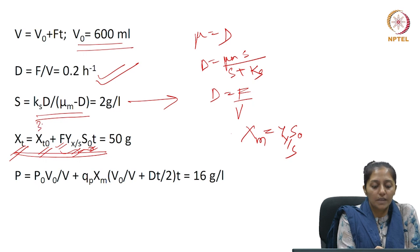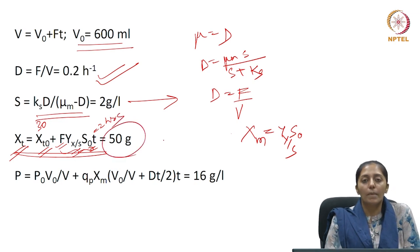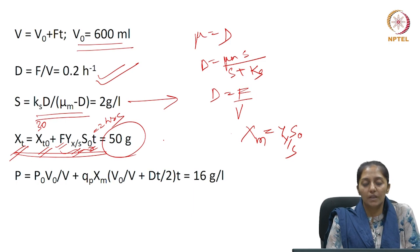So, X_t₀ is given as 30, and if you will substitute all the values with t equals 2 hours here, then your amount of biomass will come out to be 50 grams after 2 hours.